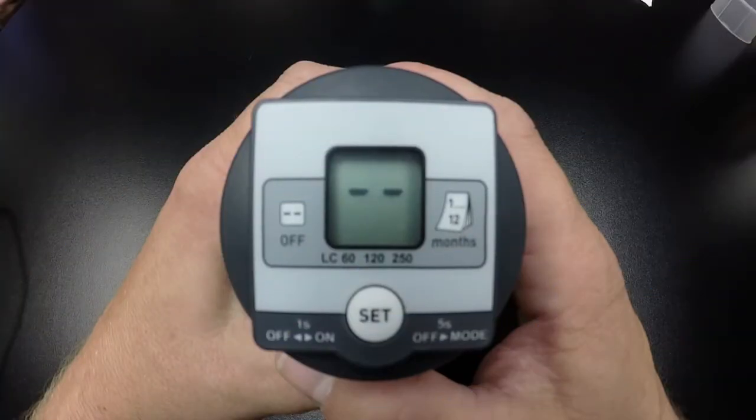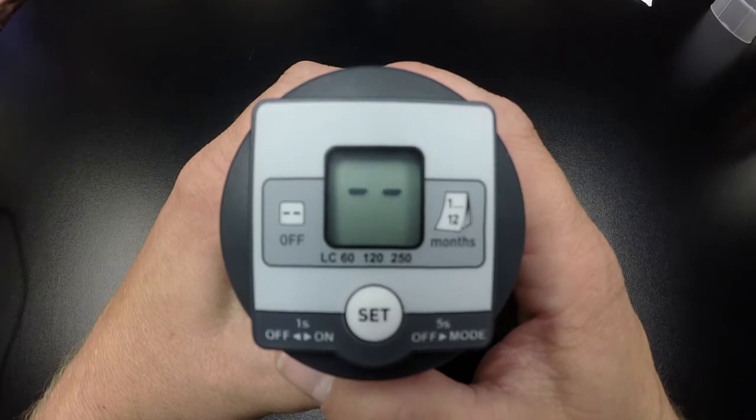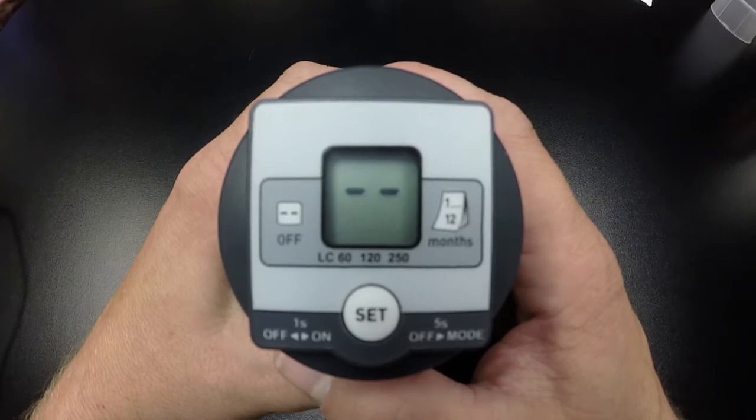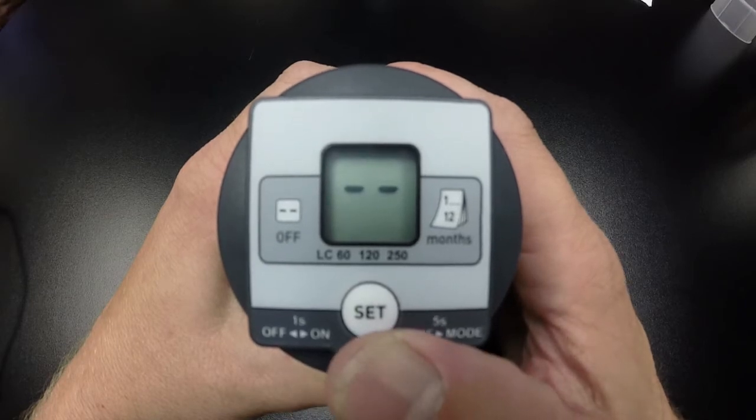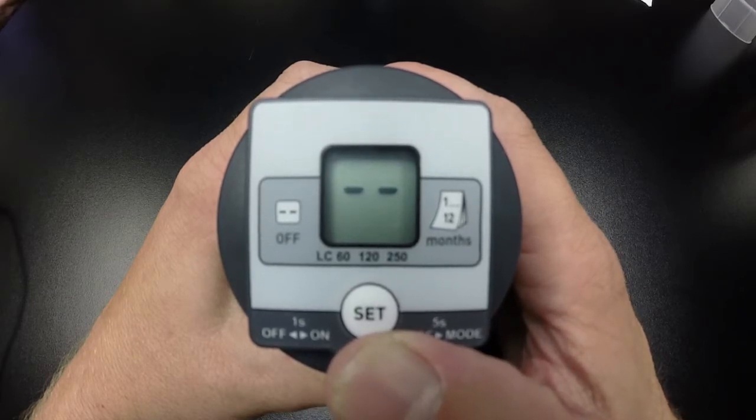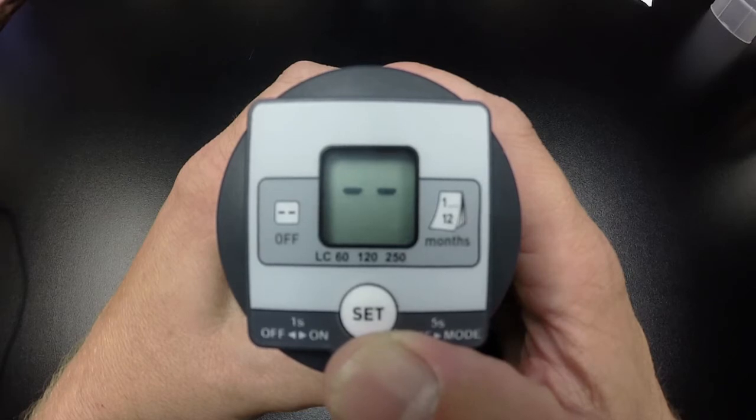The settings for the lubrication canister size and discharge are not programmed at the factory and must be manually selected on the push button LCD display prior to activation. You will notice the double lines on the display screen, which means the lubricator is off.